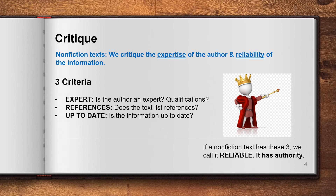When we critique non-fiction texts, we really want to give an opinion about whether the text is reliable and whether it has been written by an expert. There are three criteria to consider: we give our opinion on whether the author is an expert, which should be listed; we look for references — does the text list where it got all its information from, all the books and websites used? And we check whether the information is up-to-date. If a non-fiction text has all three — an expert author, references, and up-to-date information — we can say it's likely a reliable information text that has authority.